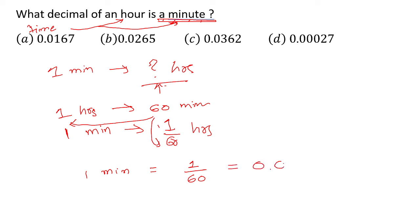If we calculate this equation, it will be 0.0166666, which is equal to 0.0167 up to four decimal points. So our answer is 0.0167. Hence our answer is option A.